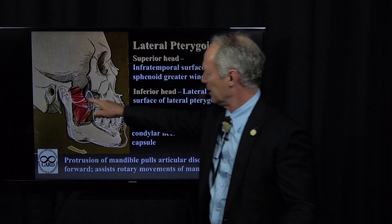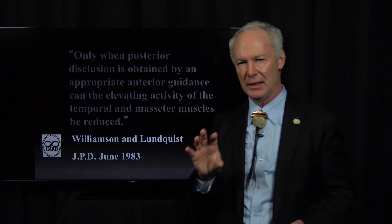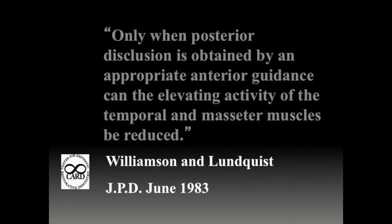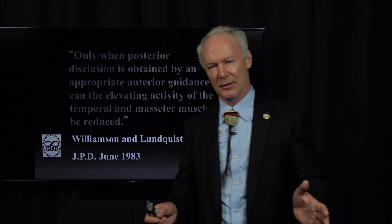This is one of the key studies of all time in relation to occlusion, done by Williamson and Lundquist in 1983. Only when posterior disclusion is obtained by an appropriate anterior guidance can the elevating activity of the temporal and masseter muscles be reduced. What does that mean?